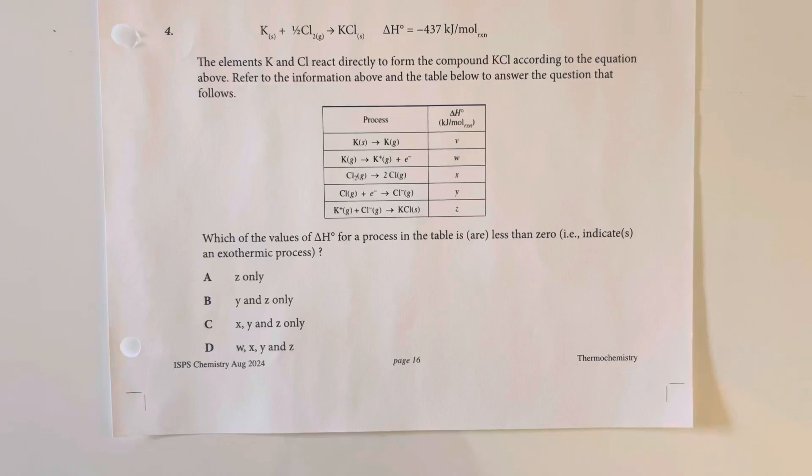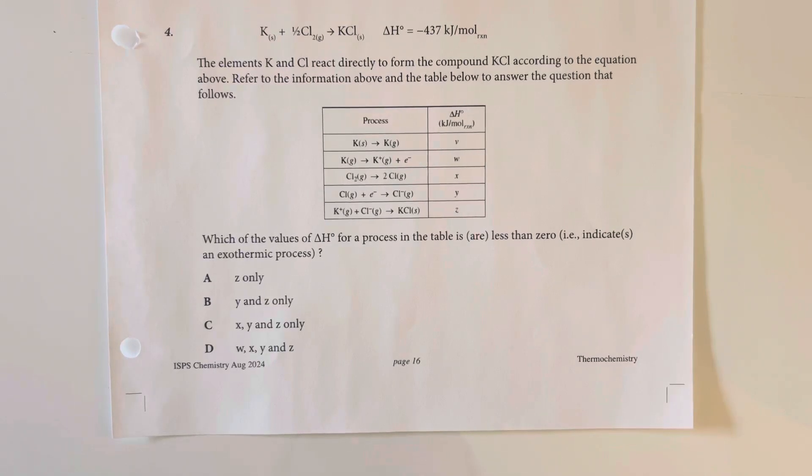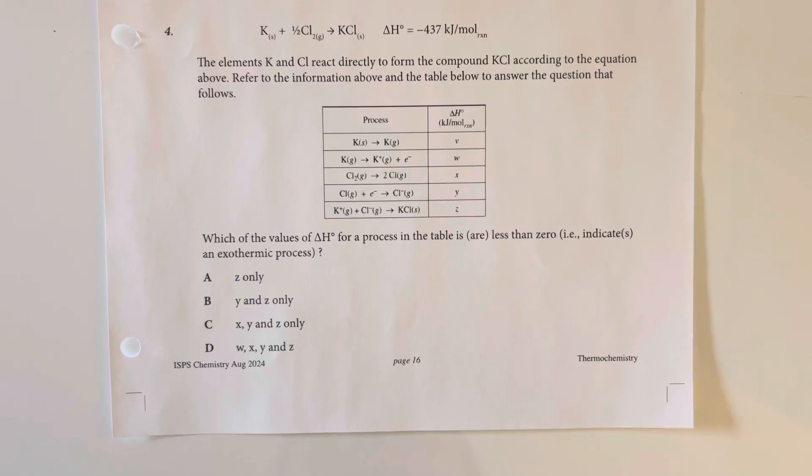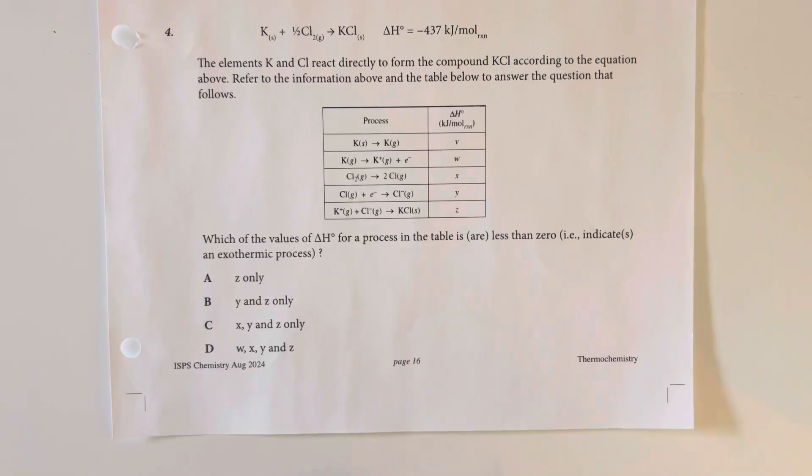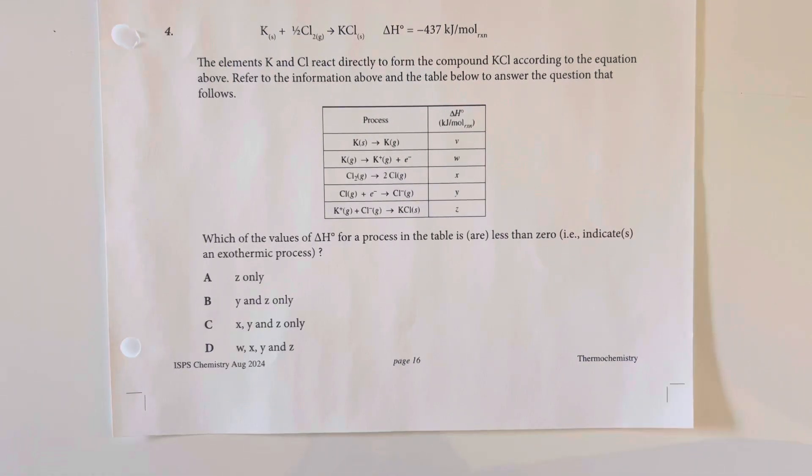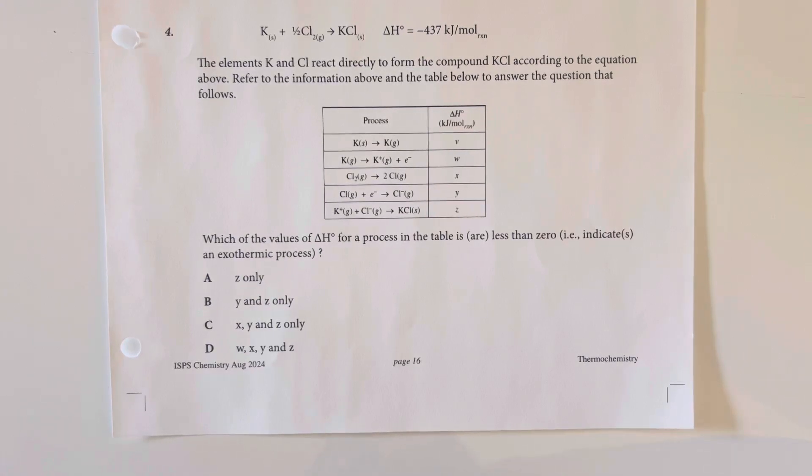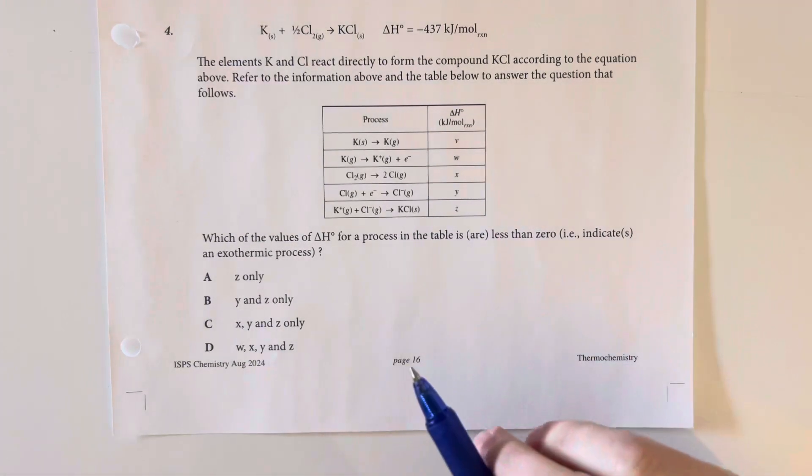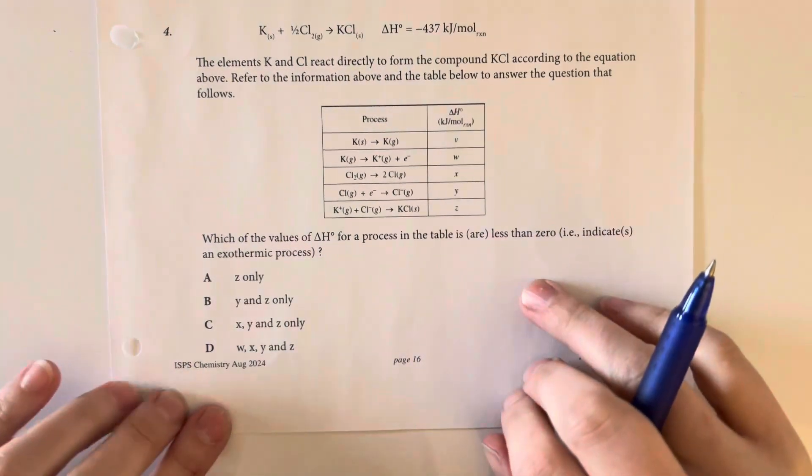The elements potassium and chlorine react directly to form the compound potassium chloride according to the equation above. Refer to the information above and the table below to answer the question that follows. Which values for delta H for a process in the table is or are less than zero indicated, which indicates an exothermic process. So, we are going to release energy and we're looking for some examples of something where we are releasing energy as we do so.